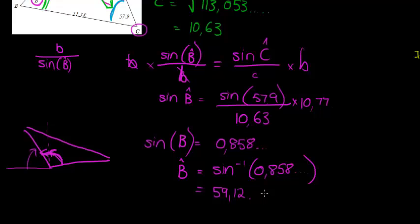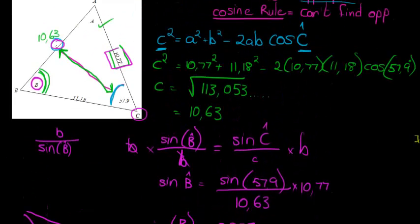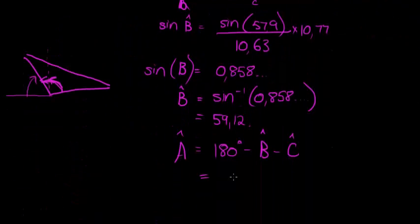Let's then find our last angle. Angle A would be equal to 180 degrees minus B minus C. For angle A, I would have 180 minus 59.12 minus 57.9 equals 62.98 degrees. That is my final angle, and I could do that because I've got my two other angles.